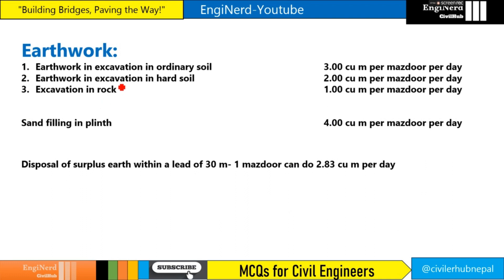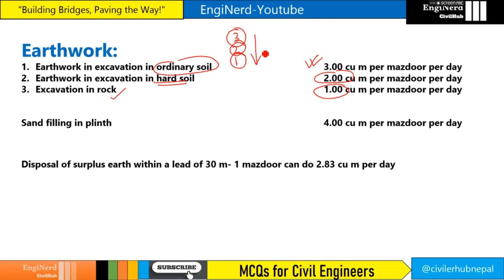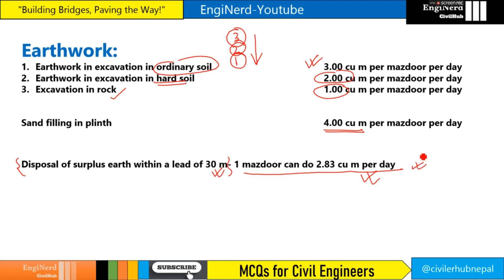For earthwork: excavation in ordinary soil is 3 cubic meter per laborer per day, in hard soil it is 2, and in rock it is 1 — easy to remember as 3, 2, 1. Sand filling in plinth is 4 cubic meter per day. For disposal of surplus earth within a lead of 30 meters, one laborer can do 2.83 cubic meter per day.